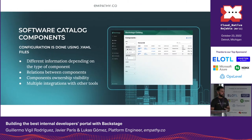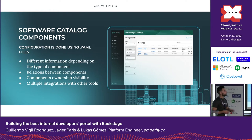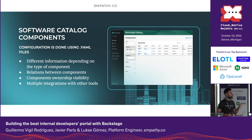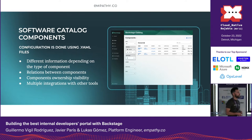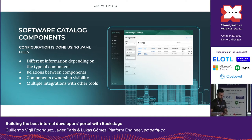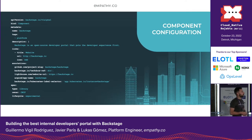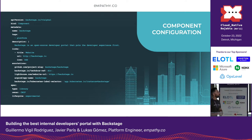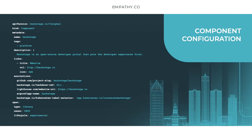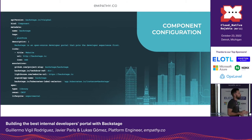Looking at the software catalog more closely, you can have all the different information for a component in the same place. You gain a lot of ownership visibility because every component has its owner and its team — which can otherwise be difficult to know. Adding a new component is really easy: just create a YAML file with the name, description, and annotations you need, place it in your GitHub repository, and Backstage does the rest.